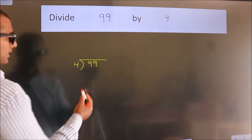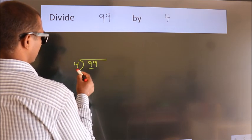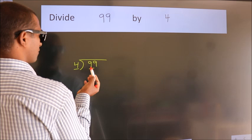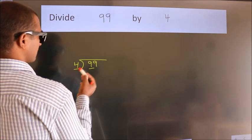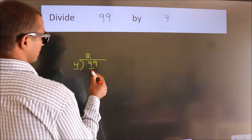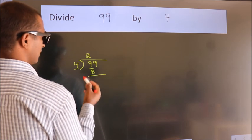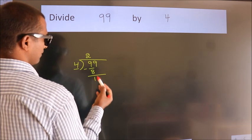Next. Here we have 9, here 4. A number close to 9 in the 4 table is 4 twos, 8. Now, we should subtract. We get 1.